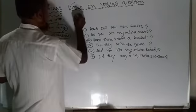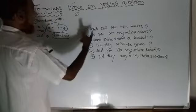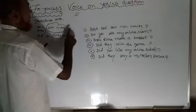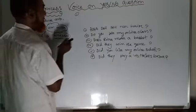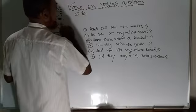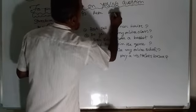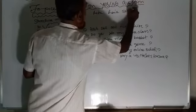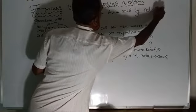Number one. If you see 'does', at the time of making passive voice, it becomes 'is', because the subject is third person singular. So we write: Is hair sold by Delia?